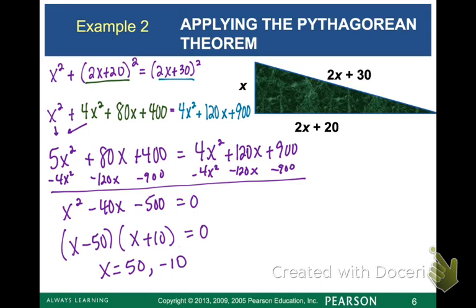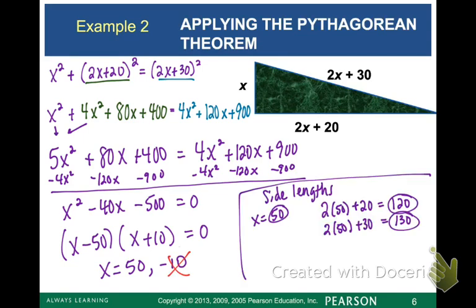Now recall that x stands for a side length of our triangle. So x equaling a negative number like 10 in this case doesn't make sense. So we're going to cross off that answer. So in the end, whenever we plug 50 back in for all three of our sides, our answer for our different side lengths are 50, 120, and 130.